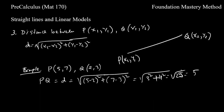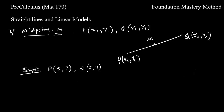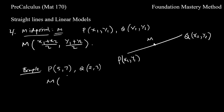Next, we find the midpoint between P and Q. The midpoint M is simply ((x₁ + x₂)/2, (y₁ + y₂)/2). For P = (5,7) and Q = (2,3), the midpoint M is ((5+2)/2, (7+3)/2), which equals (7/2, 10/2).